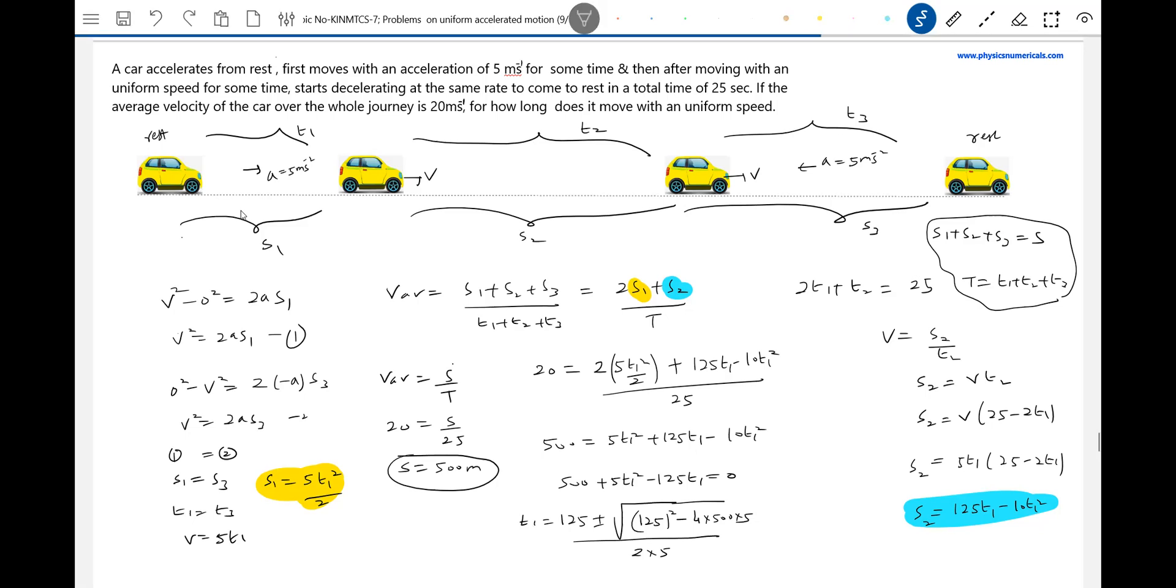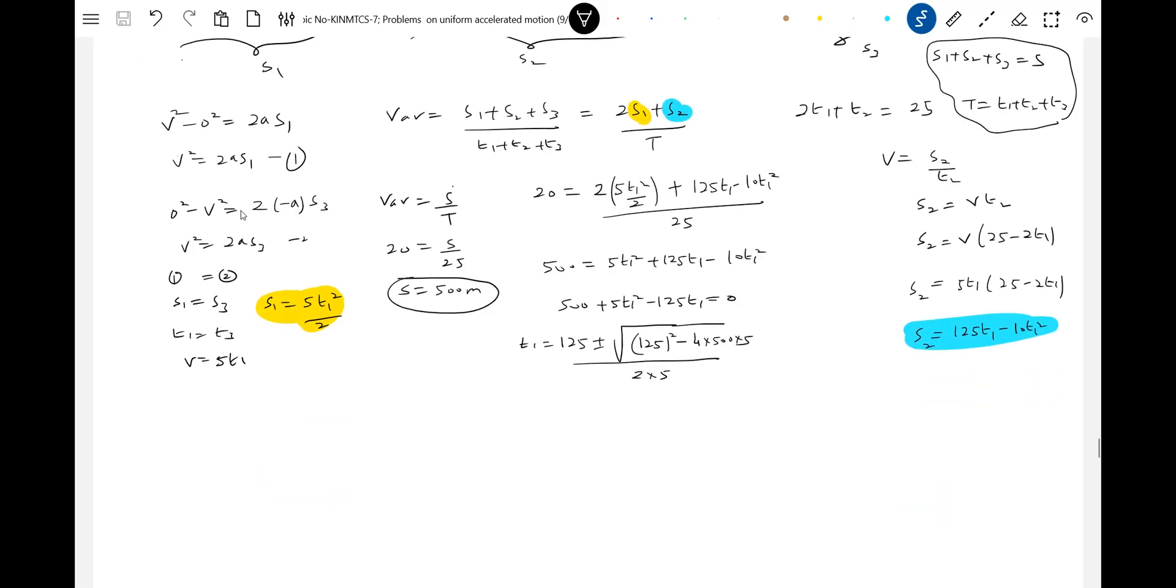125 square - such a big number. Let me calculate: 15,625. This becomes 5,625 by 10. Root of 5,625 will be 75.